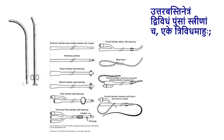Uttarbasthi yantra is the yantra mentioned in the Samhita as a tubular instrument. It is used to introduce medicines into the bladder and it comes in two varieties: kumsam and stena.